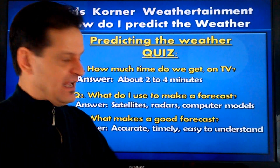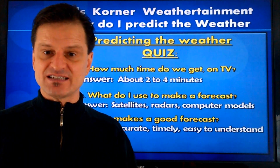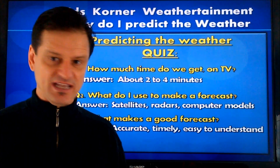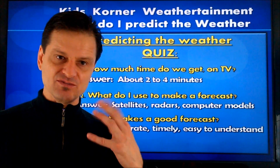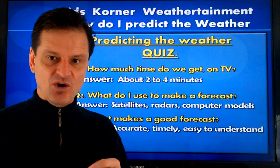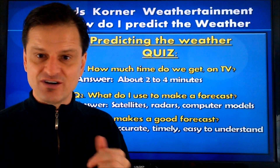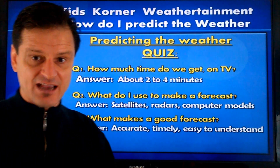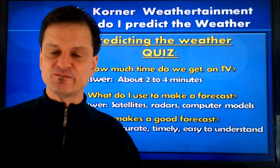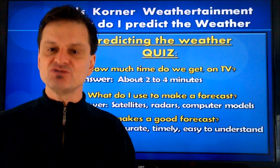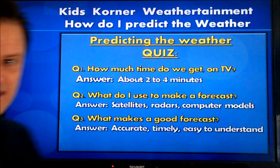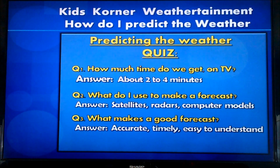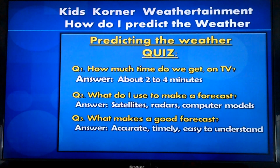And then, if I'm easy to understand, that makes a forecast good too. If you can't understand what I'm saying because I'm mumbling my words, slurring, or talking too fast, you're not going to understand it and you're not going to benefit from it being on time and accurate. So I have to speak clearly and slowly and use words that you can understand. That's how do I predict the weather. I hope you enjoyed it and learned. Thanks so much for watching.